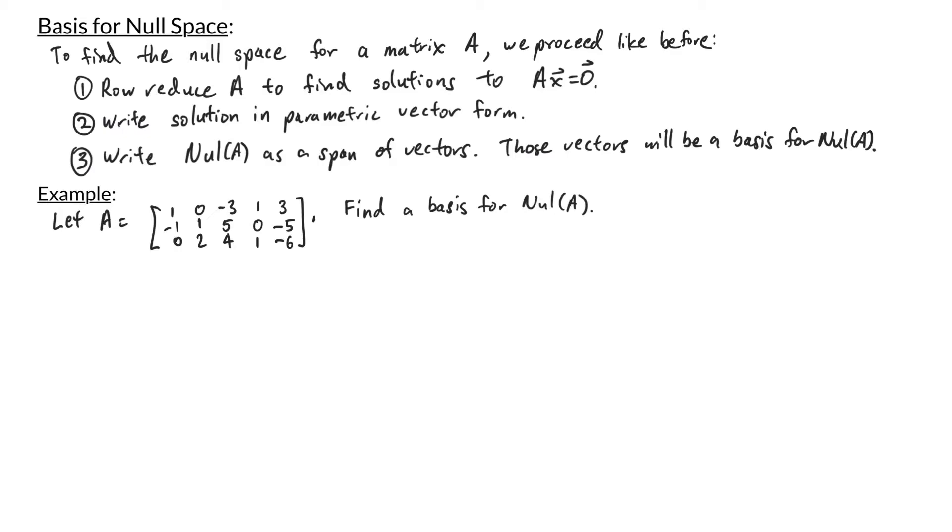First, we're going to row reduce A. I won't go through the details, but the matrix you should get is the following. You should get 1, 0, negative 3, 0, 1, 0, 1, 2, 0, negative 4, 0, 0, 0, 0, 1, 2.